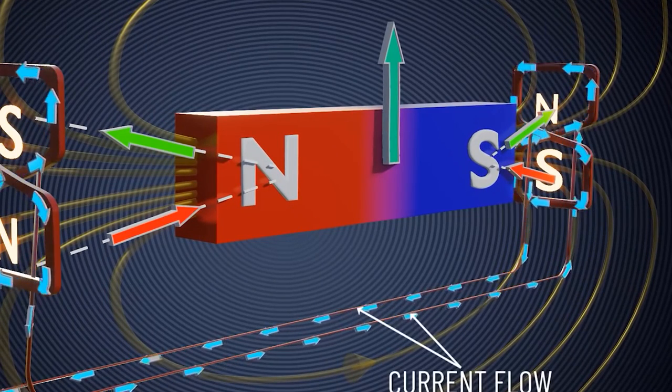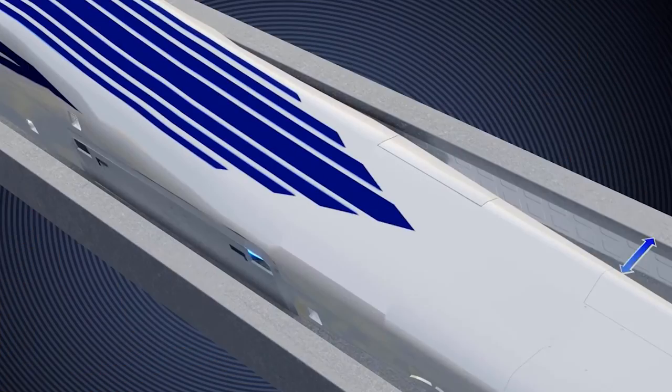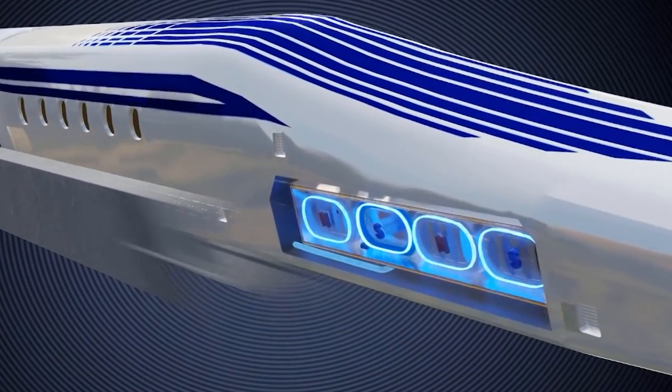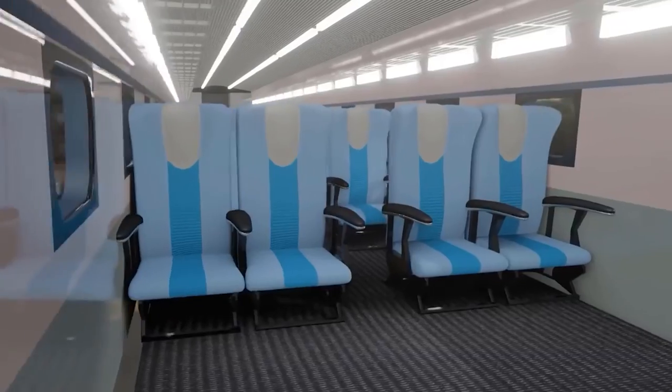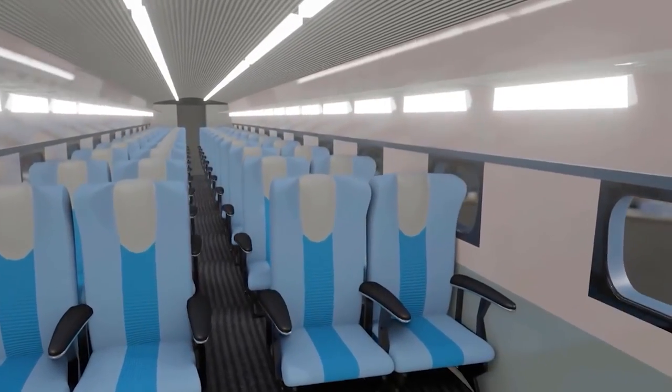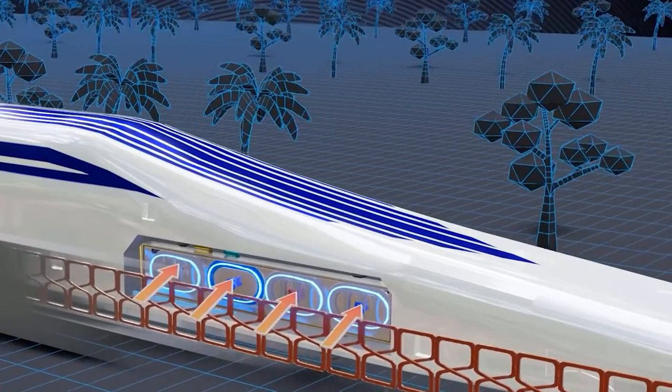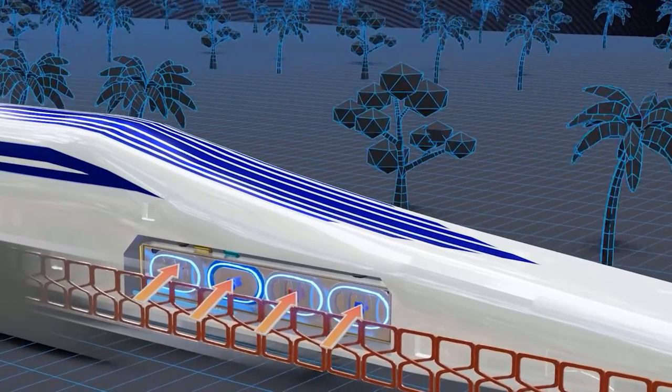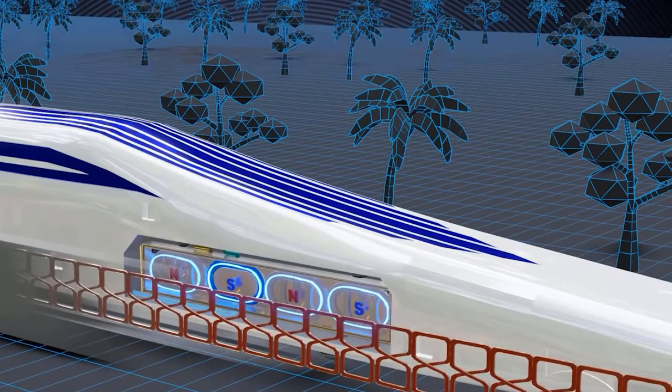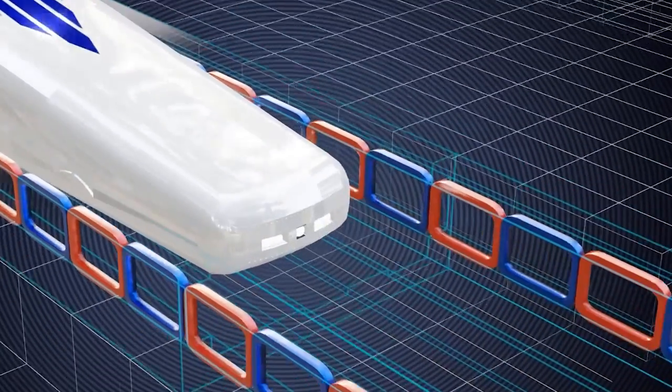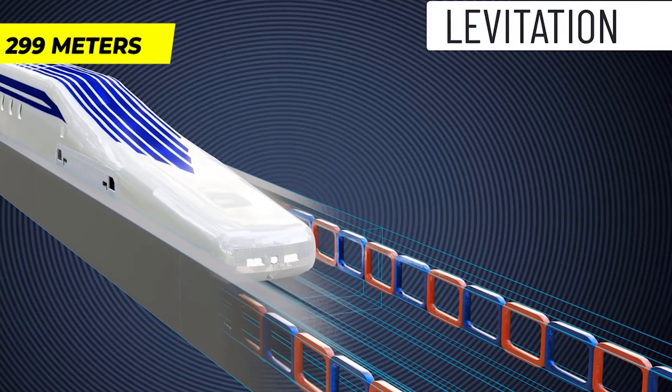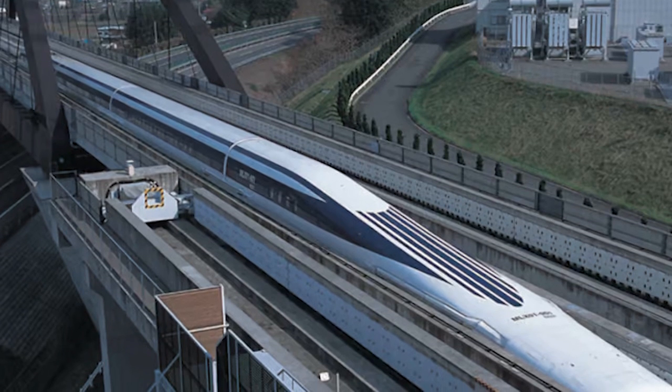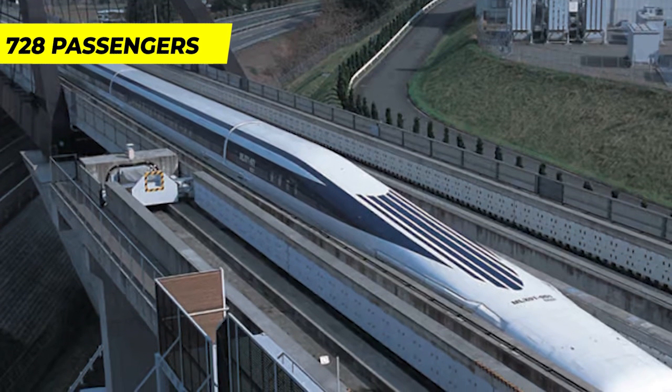The Yellow Series trains feature end cars that measure 28 meters in length and accommodate 24 passengers. To enhance aerodynamics and minimize tunnel noise, the nose extends an additional 15 meters. Intermediate cars, on the other hand, are 24.3 meters long and have a passenger capacity of 68 each. When combined, the train reaches an impressive length of 299 meters and can carry up to 728 passengers.